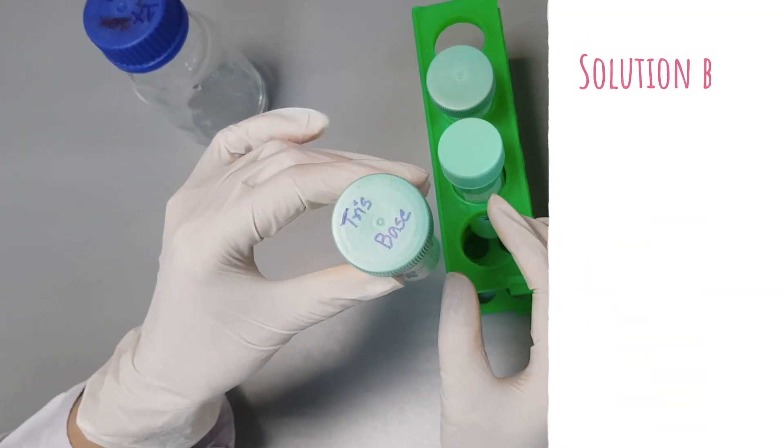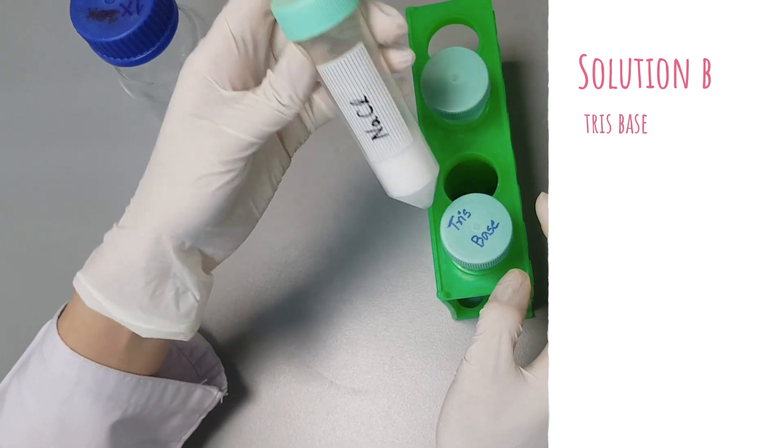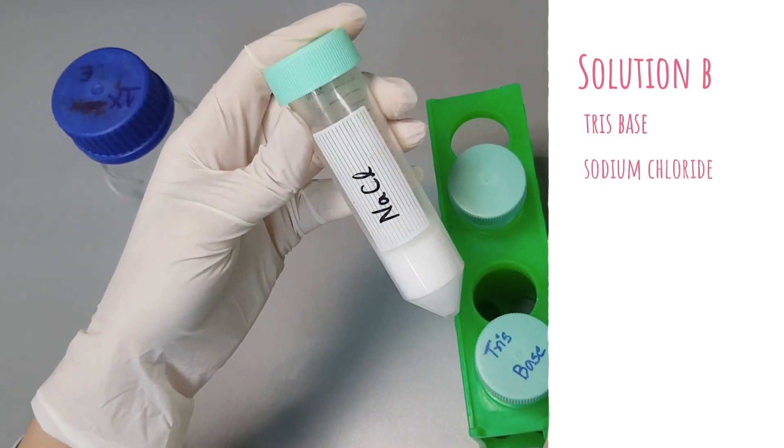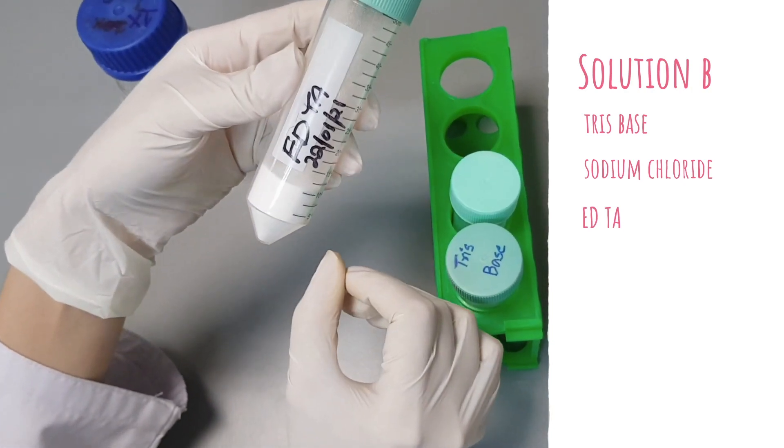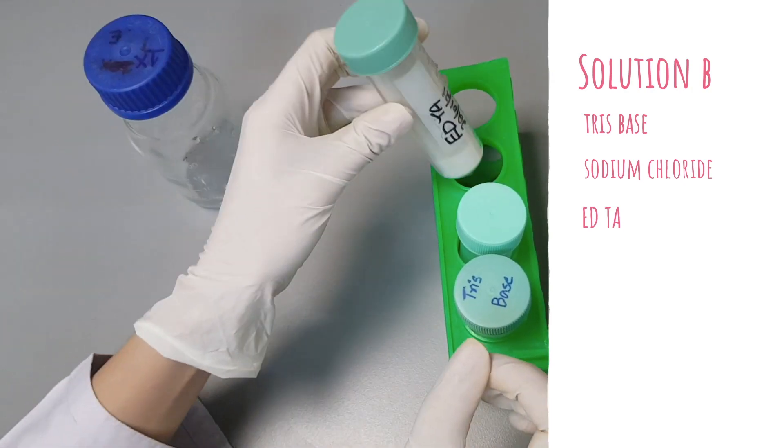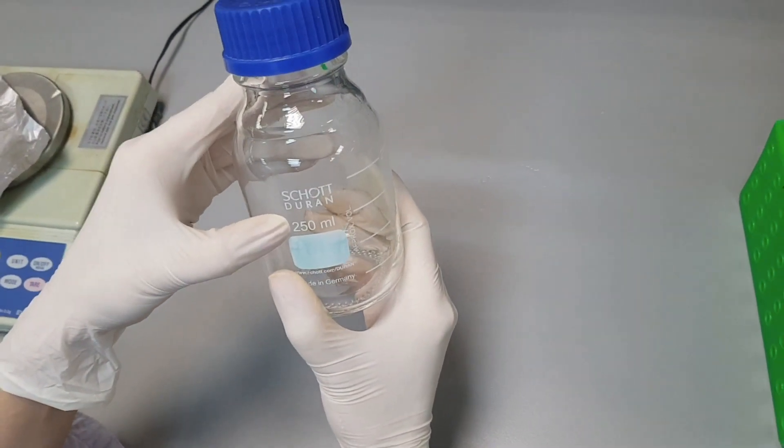Now to prepare solution B, the reagents we require are tris base, sodium chloride, and EDTA. Take a reagent bottle for preparing 150 ml solution B. Pour 100 ml distilled water in a 250 ml reagent bottle.